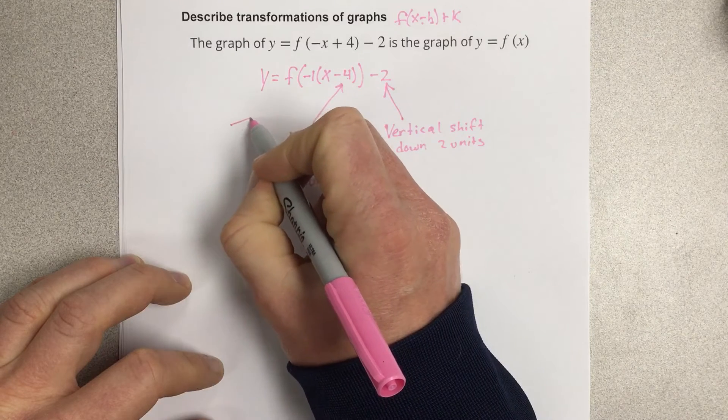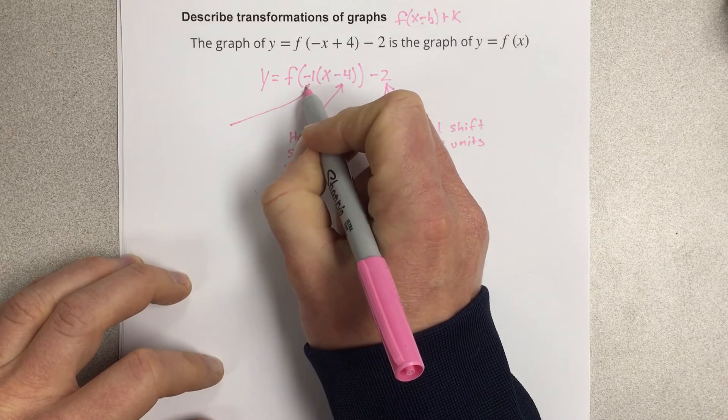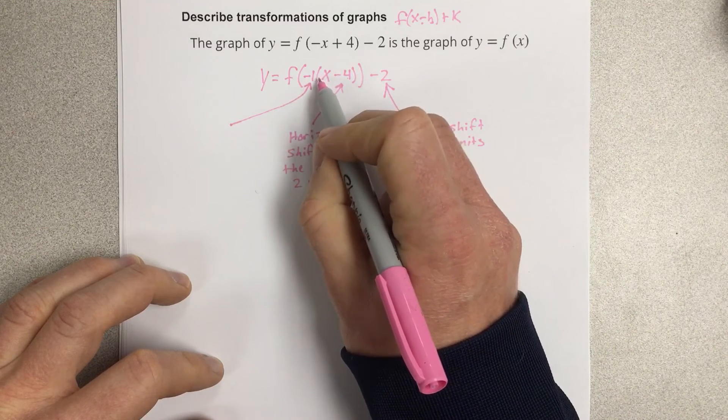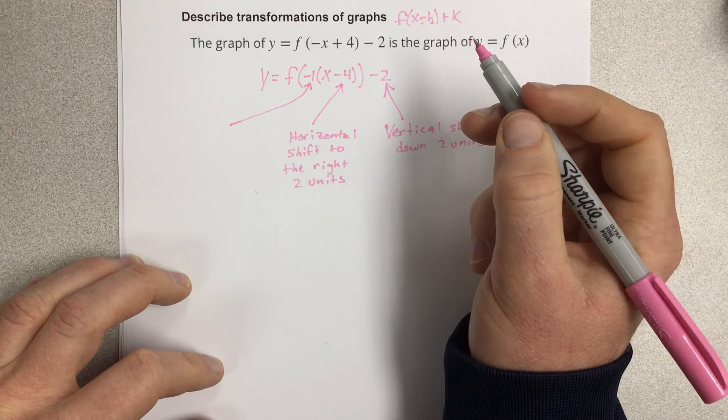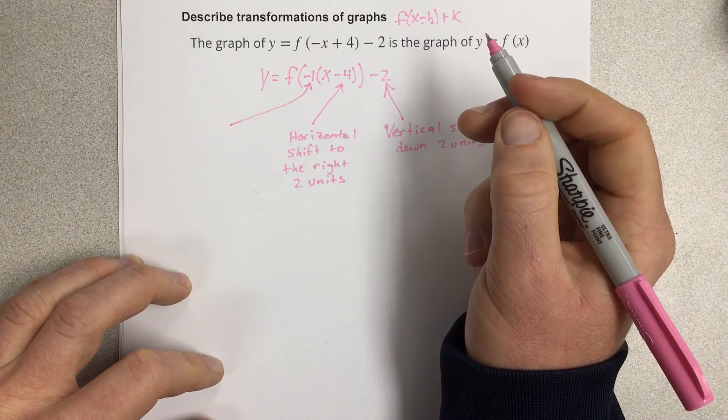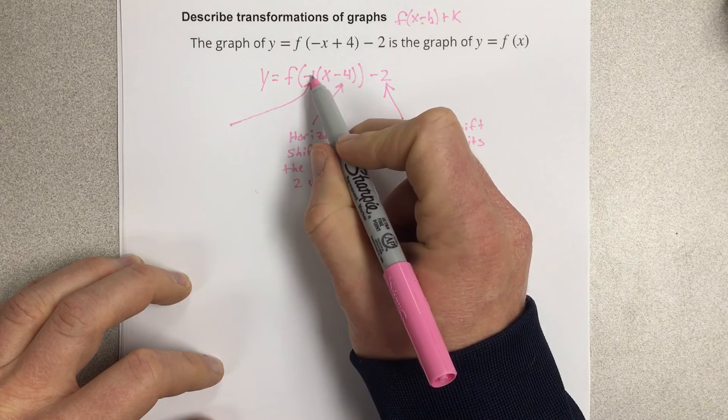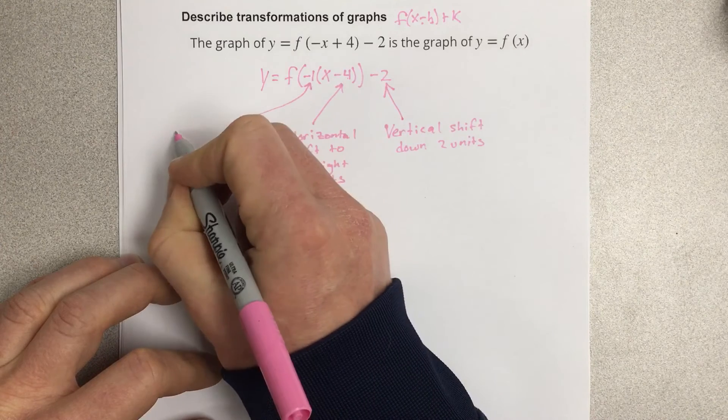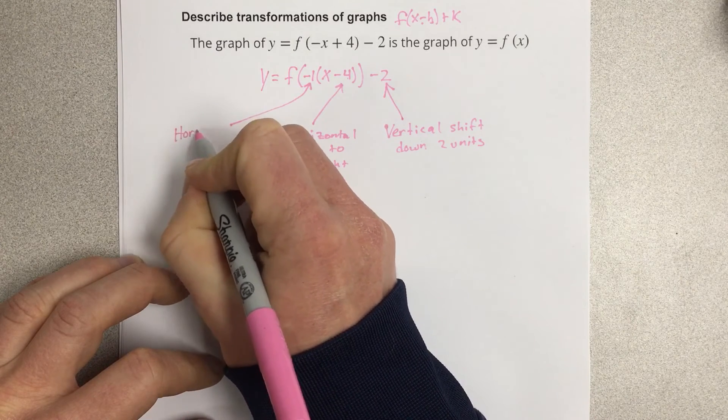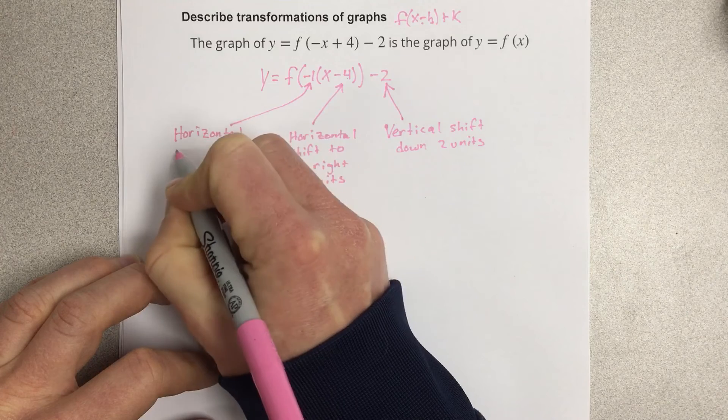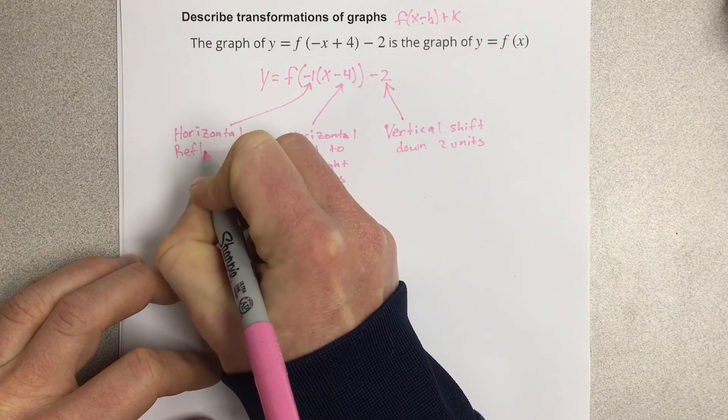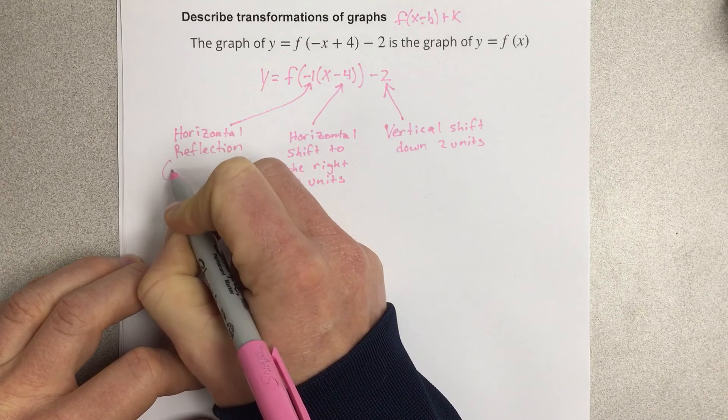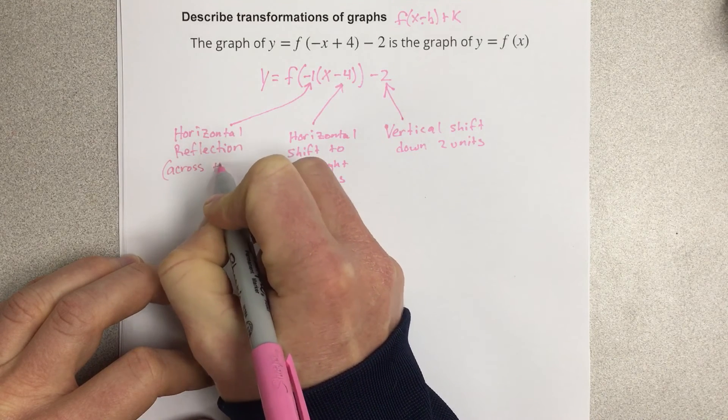And then finally, if you have a number that is in front of the x value, that's immediately doing something to the x value. That tells you you have some sort of horizontal stretch, compression, or reflection. Because this number is 1, it's not a stretch or a compression. But the negative tells you that it's a horizontal reflection, and it's a horizontal reflection across the y-axis.